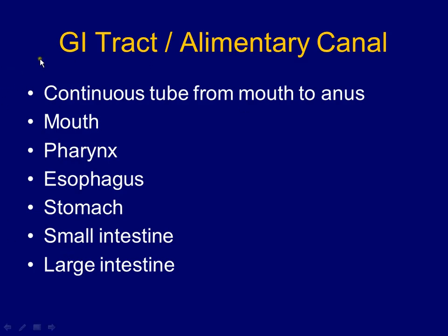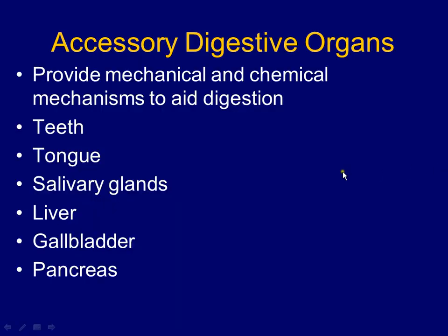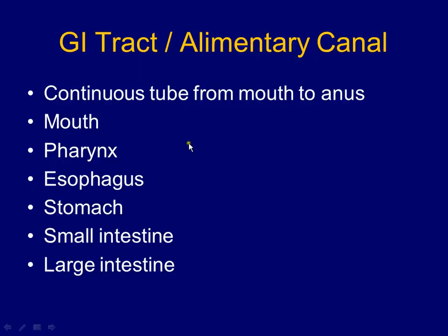Let's do an anatomy review. The alimentary canal is one continuous track — a tube within a tube. It starts at your mouth, weaves all the way down, and exits through the anus. From one end to the other it's one long continuous tube with no breaks, because any break causes infection. The primary structures are ones the marble would pass through: mouth, pharynx, esophagus, stomach, small intestine, large intestine, rectum, and anus.